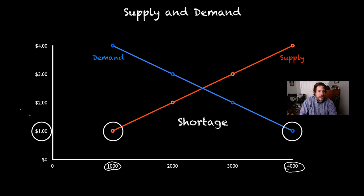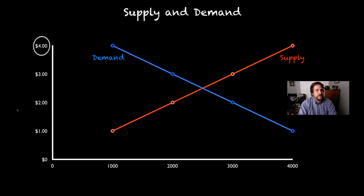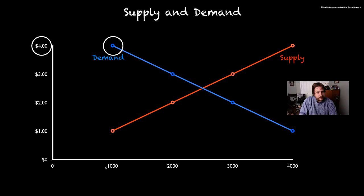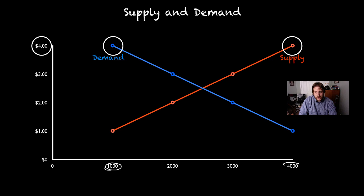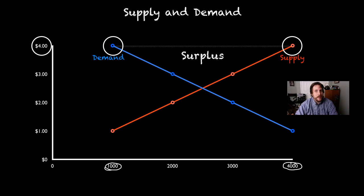We've got four thousand pounds demanded by the public and only a thousand being produced — a shortage of Brussels sprouts. When you've got a shortage, stores start to think maybe they should up the price. So let's look at what happens when stores up the price to four dollars. At four dollars, people are only willing to purchase a thousand pounds of Brussels sprouts, but farmers got excited about the four dollar price tag and produced four thousand pounds. So we end up with a surplus — more Brussels sprouts than needed.